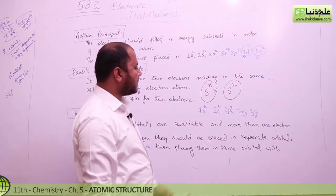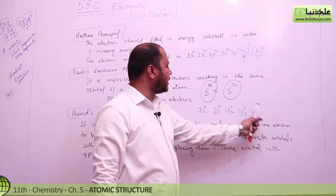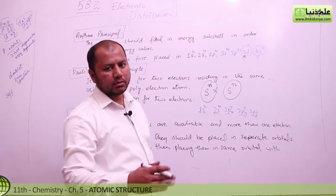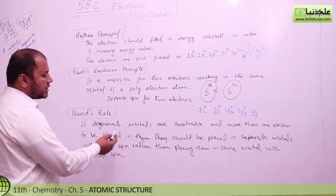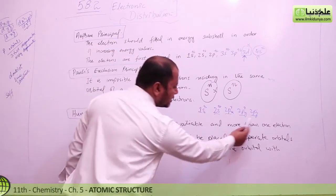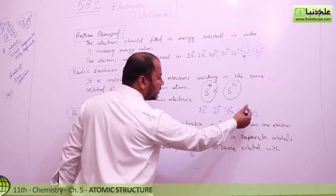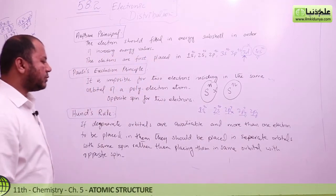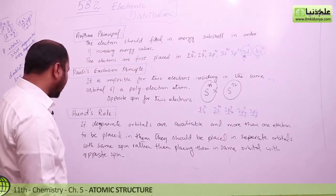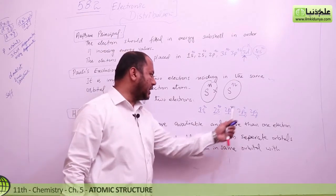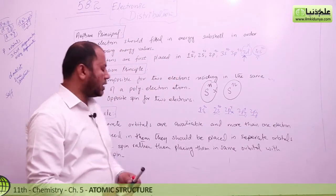Same-spin electrons will be placed in different orbitals. First, same-spin orbitals will be completed, then opposite-spin electrons will be paired. This applies as you go towards carbon, nitrogen, oxygen, fluorine, and neon. If degenerate orbitals are available and more than one electron is to be placed in them, they should be placed in separate orbitals with the same spin, rather than pairing with opposite spin in one orbital. This is known as Hund's rule.